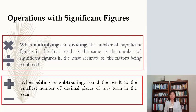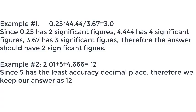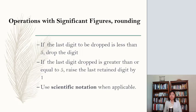And when adding or subtracting, round the result to the smallest number of decimal places of any term in the sum. And in regard to rounding, if the last digit to be dropped is less than 5, drop the digit. If the last digit dropped is greater than or equal to 5, raise the last retained digit by 1. Use scientific notation when applicable.